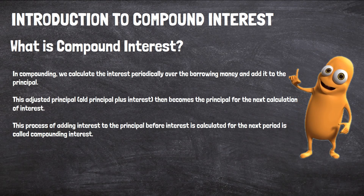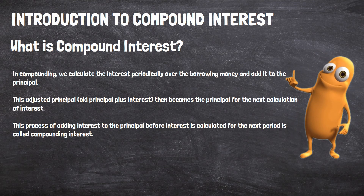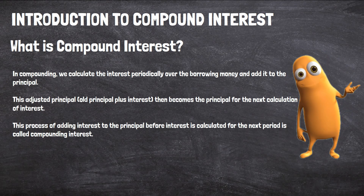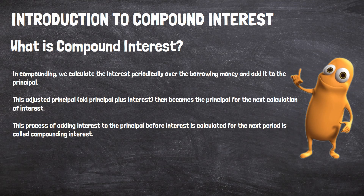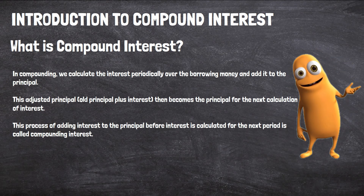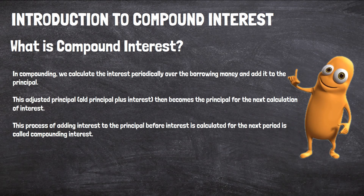In the previous topic, we studied simple interest, where interest is based on the initial deposit and is only calculated once during the investment process — in other words, interest is paid on the principal value only. Alternatively, interest can be compounded. In compounding, we calculate the interest periodically over the borrowing period and add it to the principal. This adjusted principal — old principal plus interest — then becomes the principal for the next calculation. This process is called compounding interest, where we earn interest on our interest.